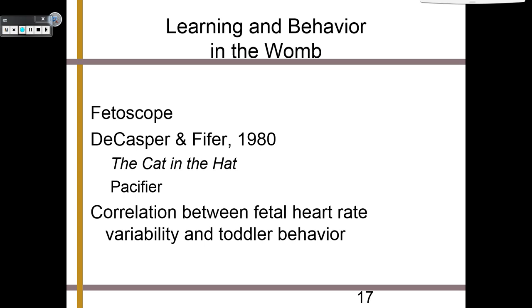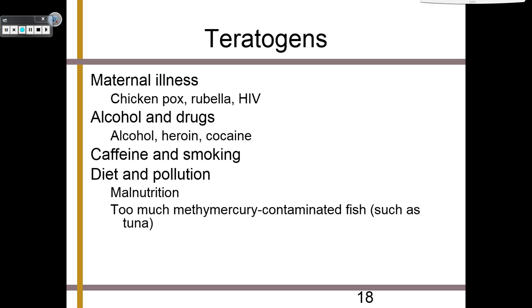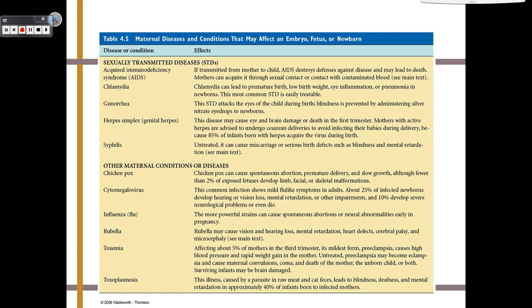Teratogens are anything that can affect mom while she's pregnant that will then affect the baby. These can be maternal illnesses like chickenpox, HIV, alcohol and drugs, caffeine, smoking, a poor diet, pollution, and even maternal stressors — so on top of everything else, mom has to make sure she doesn't get too stressed out. This is an exhaustive list of all the different teratogens and the effects they may have on an unborn child, as well as diseases and specific conditions and what they will do to the baby upon birth.